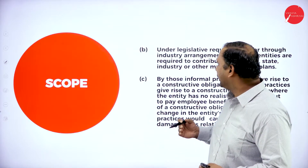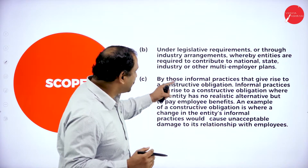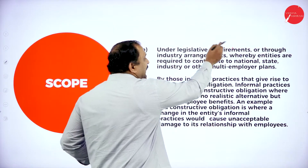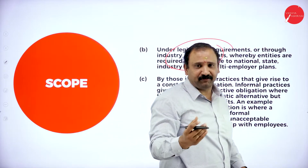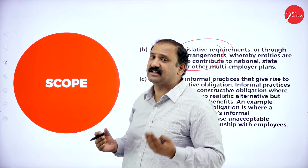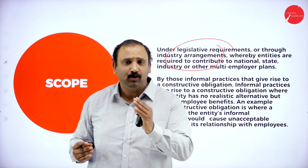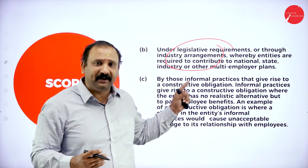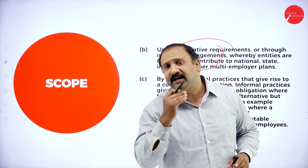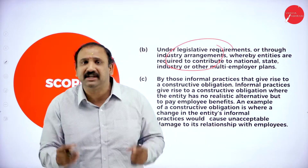Under legislative requirements or through industry arrangements, entities are required to contribute to the national state or multi-employer plans. Most of us know about PF, DA, TA, and other plans such as PPF or insurance, which have been recognized by the central and state governments. The necessary deductions have to be made on time and credited to the respective accounts. The employee has to get all the benefits; the employer cannot hide this amount, put it in some other account, and cheat the employee.